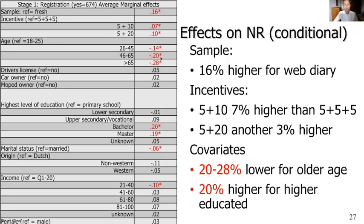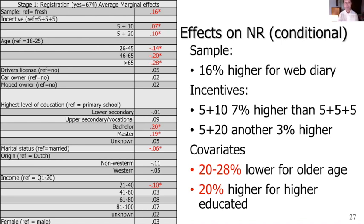For all the people in our sample we had covariates available from the Netherlands population register, which includes not only addresses but also age, gender, education level, whether you have a driver's license, whether you are a car or moped owner. We looked at whether people registered the app using logistic regression, including all these covariates. I'm showing average marginal effects. For example, the 0.16 means the probability of installing is 0.16 higher when you were a previous respondent in the diary study compared to a fresh respondent.